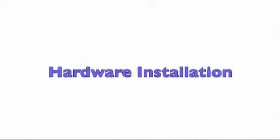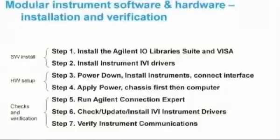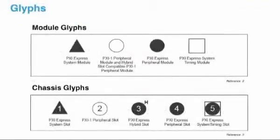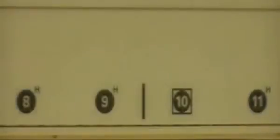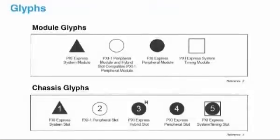Now that all the software and drivers are installed, we can move on to Steps 3 and 4 where we install the hardware. Let's take a quick moment to talk about glyphs. Every PXI chassis contains glyphs above each slot, indicating to the user what type of card is compatible with that slot. The M9018A has 18 slots — all of them are PXI Express hybrid slots, with the exception of slot 1 and slot 10. Slot 1 is a PXI Express system slot, and slot 10 is the PXI Express system timing slot.